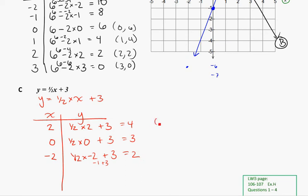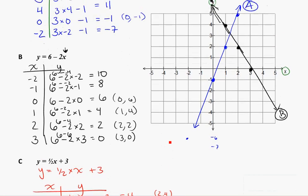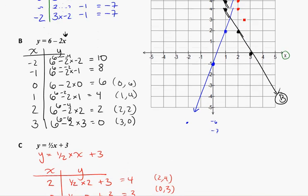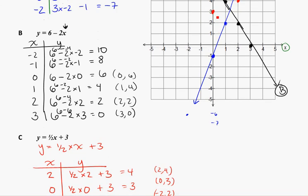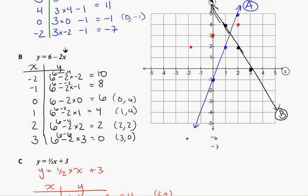So let's try it out. 2, 4, 0, 3, and negative 2, 2. So 2, 4, 0, 3, and negative 2, 2.